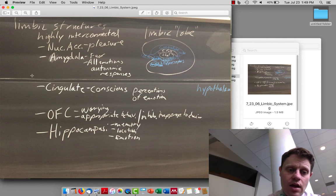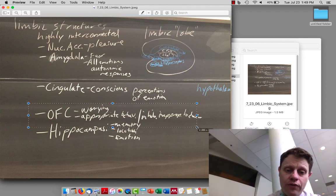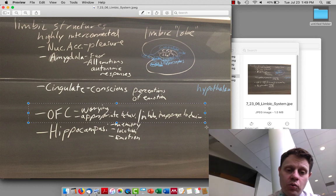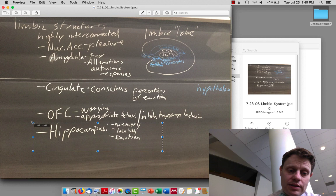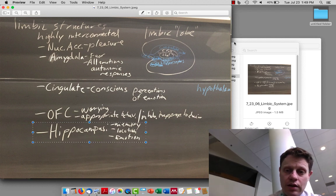It interacts with the hypothalamus. The cingulate is more for conscious perceptions of emotions. The orbital frontal cortex, which we've talked about already, is involved in worrying and managing appropriate behaviors. And the hippocampus is a structure involved in memory and also emotional and autonomic regulation.